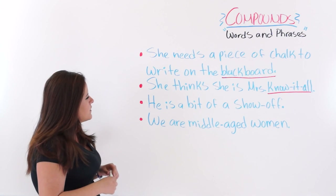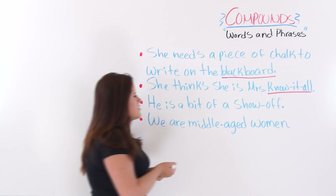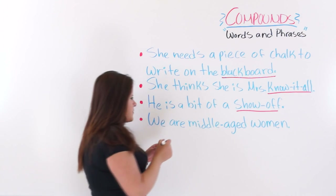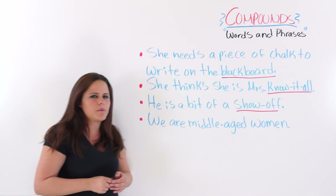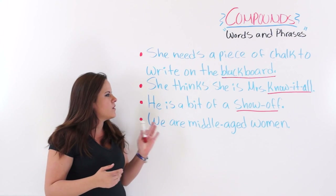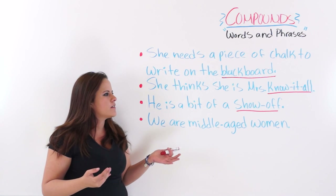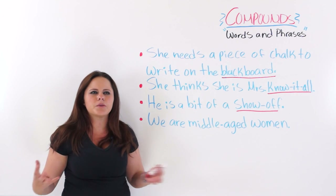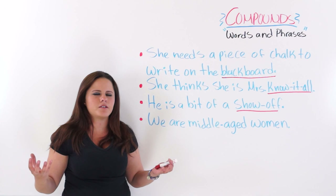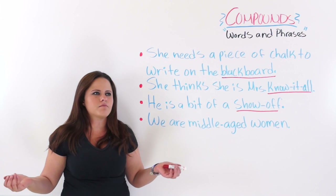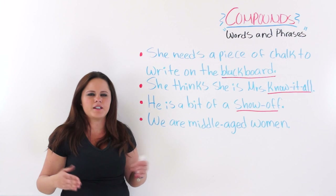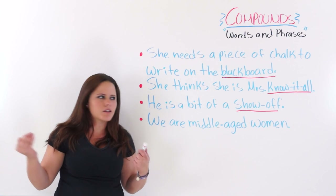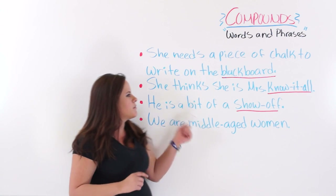The next one says: 'He is a bit of a show-off.' Show-off is also another idiomatic expression, but it is also a compound phrase. What is it to show off? It is when you want attention from somebody else, so you start doing things to call their attention — for example, driving your Jaguar at 200 miles per hour. That would be being a show-off, because you want everybody to look at you.